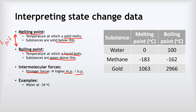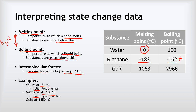The stronger the intermolecular forces of a substance, the higher the melting and boiling points will be. For example: water at minus 34°C — the melting point of water is 0°C, so it would be solid. Methane at minus 150°C — melting point is minus 183°C and boiling point is minus 162°C, so minus 150 is above the boiling point, meaning methane would be a gas. Gold at 1450°C — melting point 1063°C, boiling point 2966°C, so gold would be a liquid. You only need to remember water's melting point (0°C) and boiling point (100°C).